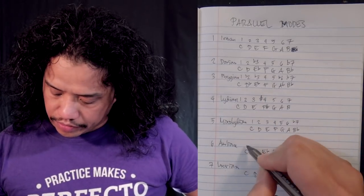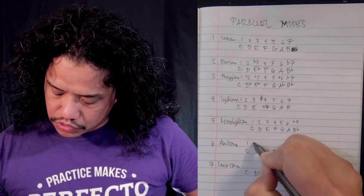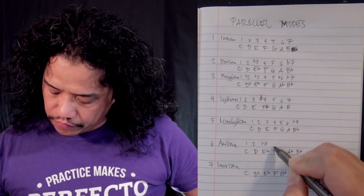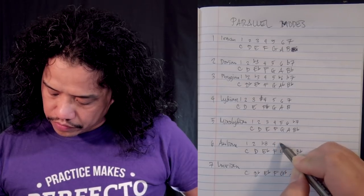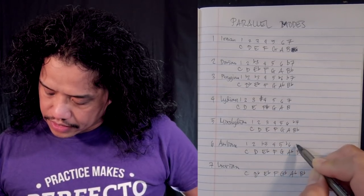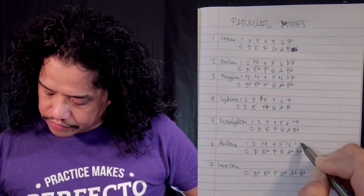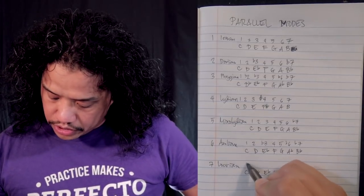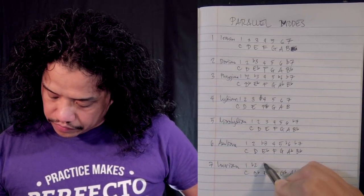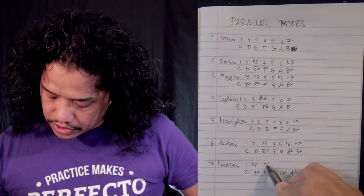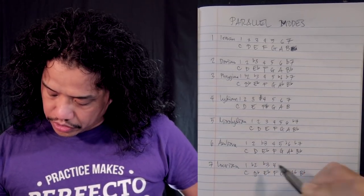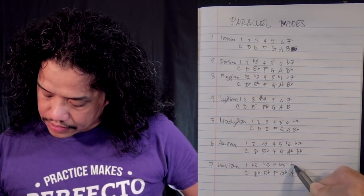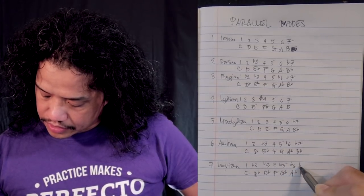Aeolian has: one, two, flat three, four, five, flat six, flat seven. And finally Locrian has: one, flat two, flat three, four, flat five, flat six, flat seven.